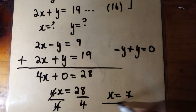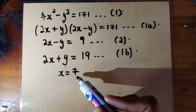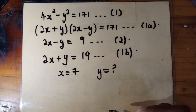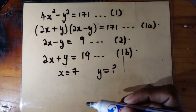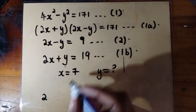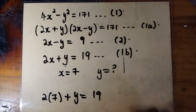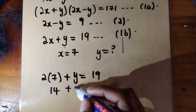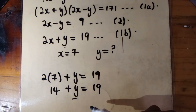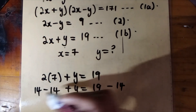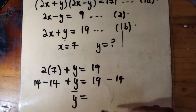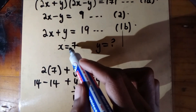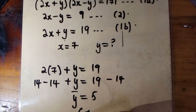Now that we have x equals 7, we substitute into equation 1b to find y. We have 2 times 7 plus y equals 19, which gives 14 plus y equals 19. Subtracting 14 from both sides, y equals 5. So the value of x is 7 and the value of y is 5, which we can write in coordinate form as (7, 5).